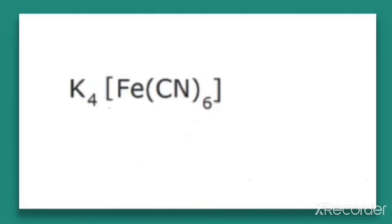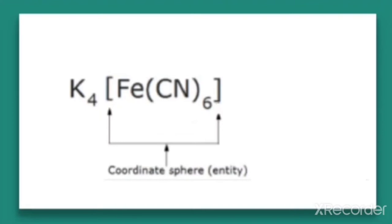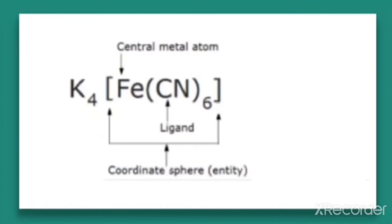Let us take one example: K4[Fe(CN)6]. The coordination compound is represented in a square bracket. These square brackets are called the coordination entity or coordination sphere, which constitutes the central metal atom or ion. Here, Fe is the central metal atom, bonded to a number of oppositely charged ions or neutral molecules called ligands. CN is the ligand here, which is negatively charged. There are some ions called counter ions, which are usually represented outside the bracket — here K4 is the counter ion.